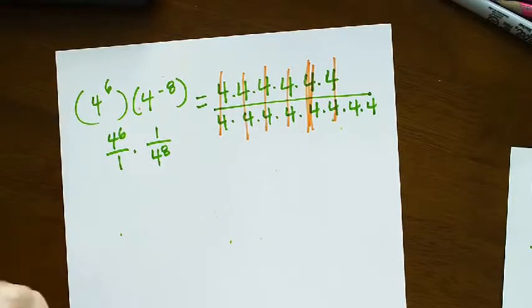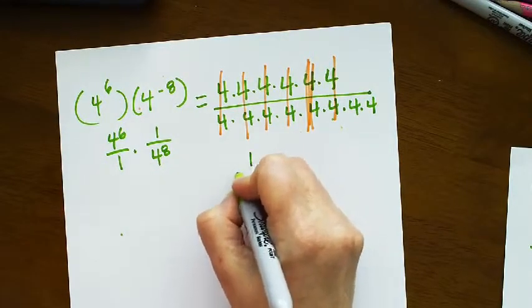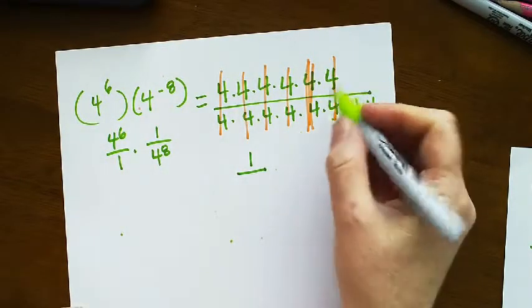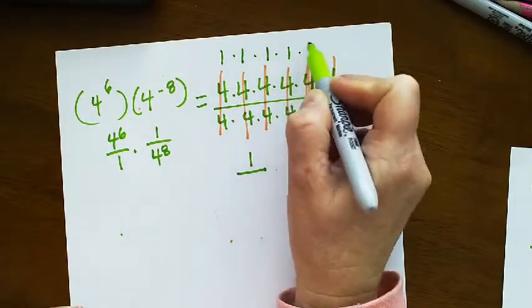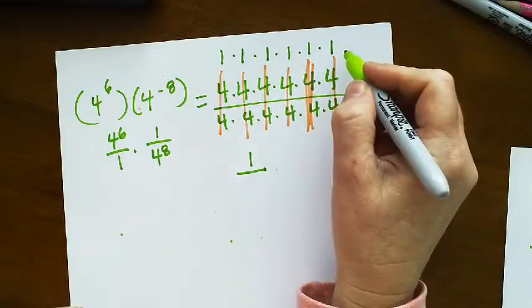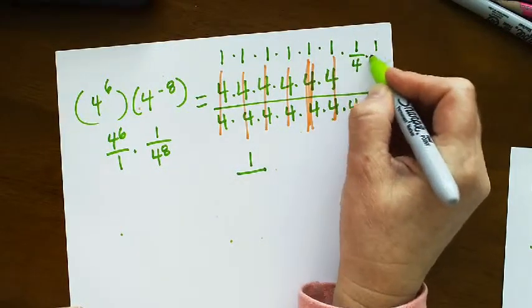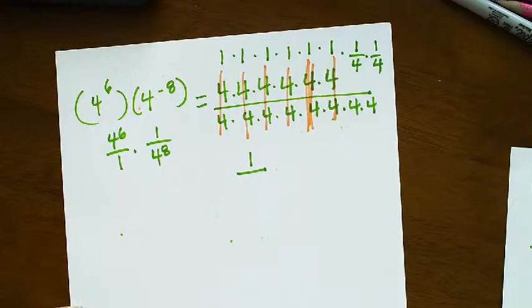So that would give me 1 over, if there's nothing left over on top that's 1 because this is really like saying 1 times 1 times 1 times itself 6 times times 1 over 4 times 1 over 4. So there's really a 1 left over on top, 1 over 4 squared.